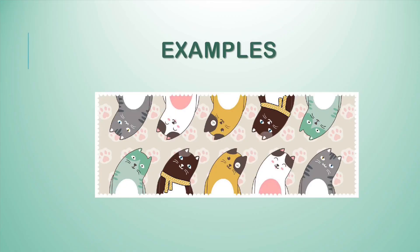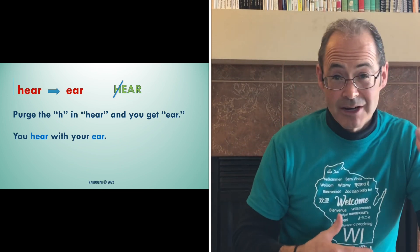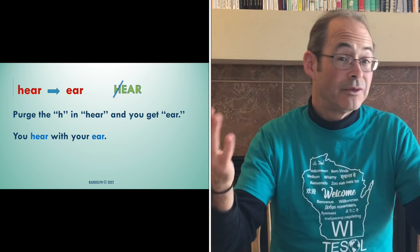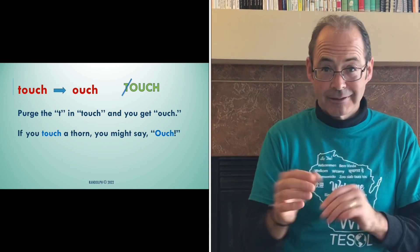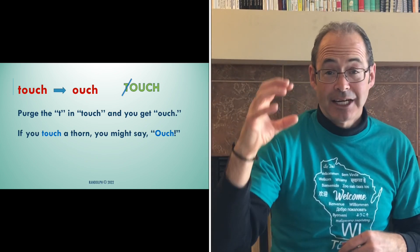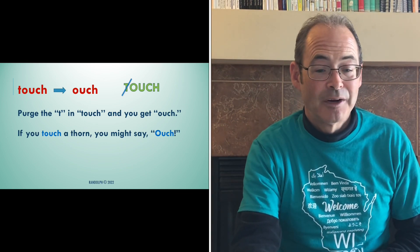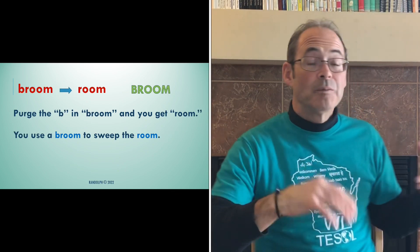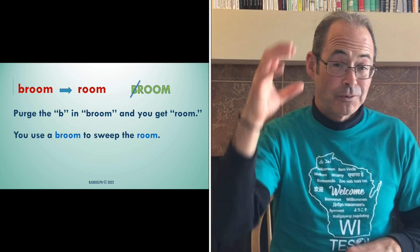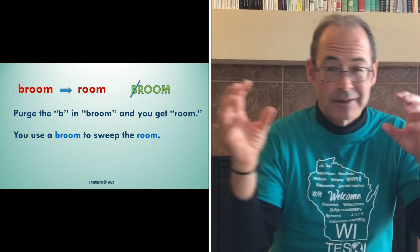Let's start with some English examples. Number one: 'hear' goes to 'ear.' You purge the H in 'hear,' you get 'ear.' Example sentence: you hear with your ear. Another one — 'touch' and 'ouch.' You purge the T in 'touch,' and you're left with 'ouch.' So if you touch a thorn, you might say ouch. It's a neat connection between the actual feeling of something and the possible result. Another neat one is 'broom' going to 'room.' Purge the B in 'broom,' you're left with 'room.' You use a broom to sweep a room — again, there's a neat connection there.